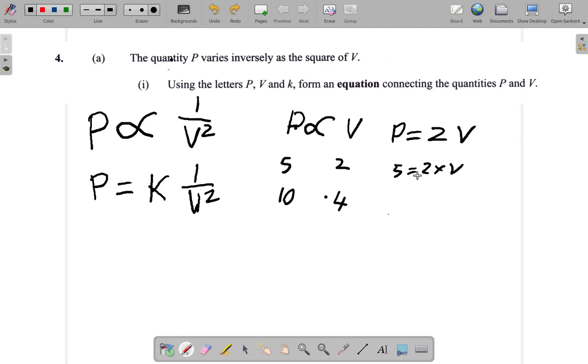So what you would have is when P is 10? 10 equals 2 times V. So what would be V? V would be 5.